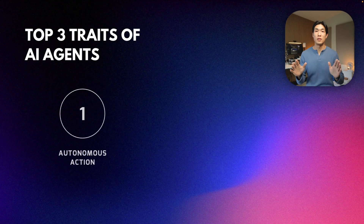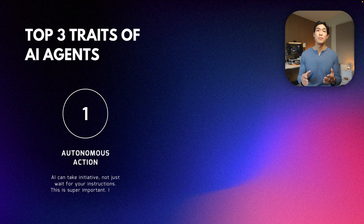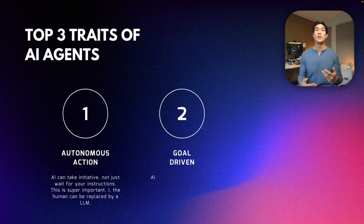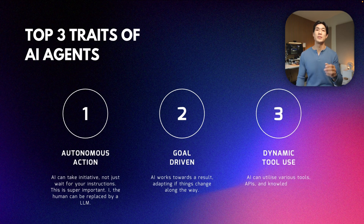The top three traits of AI agents are: number one, autonomous action — AI can take the initiative, not just wait for your instructions; the human can be replaced by an LLM. Number two, goal driven — AI works towards a result adapting if things change along the way. And number three, dynamic tool use — AI can utilize various tools, APIs and knowledge sources, making decisions in real time. Basically a digital teammate who solves problems for you from start to finish, without attitude issues or stakeholder management difficulties like with real human teammates.